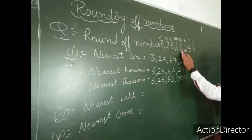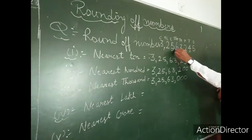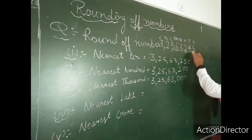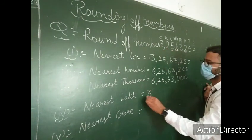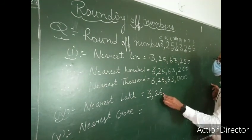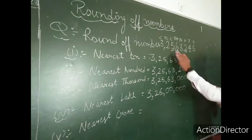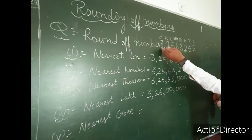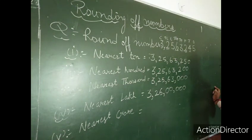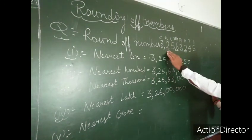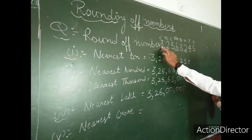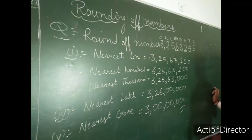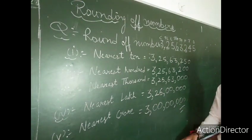For nearest lakh, the digit in the lakh place is 5 and the right-hand side digit is 6. Since 6 is greater than 5, we add 5 plus 1 = 6, and the other digits to the right are replaced by 0. Result: 3,25,60,000 — wait, 3,26,00,000. For nearest crore, the required digit is 3 and the right-hand side digit is 2. Since 2 is smaller than 5, we write 3 as it is and replace the other digits with 0. Result: 3,00,00,000. By using this method you can find rounding to nearest 10, 100, 1000, lakh, and other places.